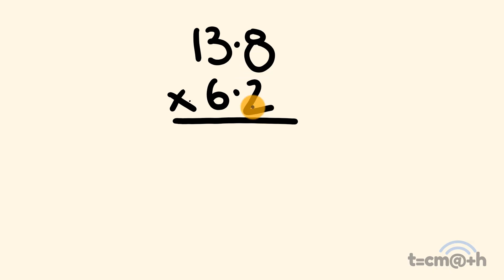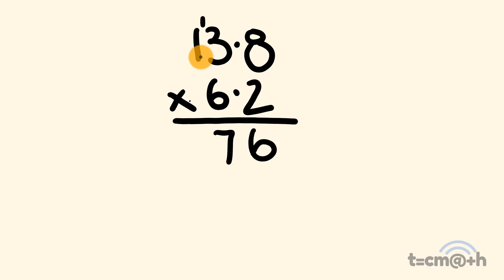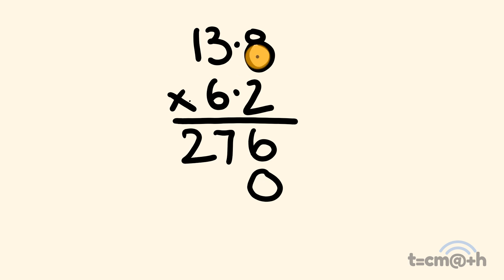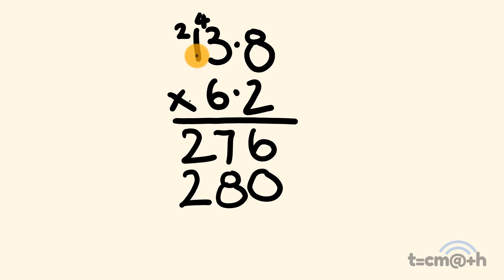First off we have 8 times 2 which is equal to 16 — we put the 6 there and carry the 1. We have 3 times 2 which is equal to 6, plus 1 is equal to 7. And 1 times 2 is equal to 2 — just put that in right there. For the next line we put the 0 down first and go 6 times 8 which is equal to 48 — put the 8 there and carry the 4. Then 3 times 6 is equal to 18, plus 4 is equal to 22 — so 2 there and carry the 2. Finally 1 times 6 is equal to 6, plus 2 is equal to 8.